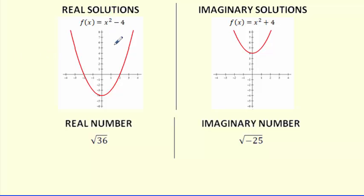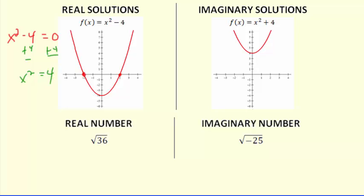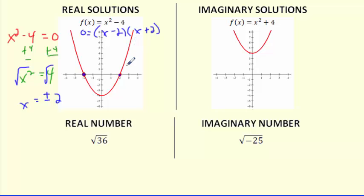So let's do a quick review. We've done real solutions — we've had real answers. If I graph the function x squared minus 4, it's a nice parabola, and I can see it hits here and here. Our x-intercepts are our roots. Solving x squared minus 4 equals 0, we add 4 to both sides to get x squared equals 4, then square root both sides to get x equals plus or minus 2. Or you can factor it as a difference of squares: x plus 2 times x minus 2, giving solutions of 2 and negative 2. The x-intercepts are the roots — they're all the same thing.